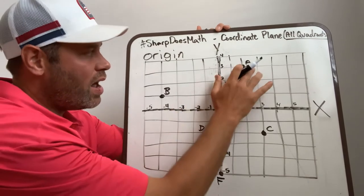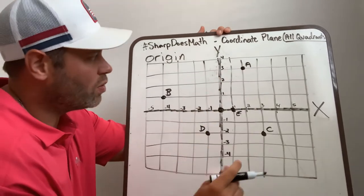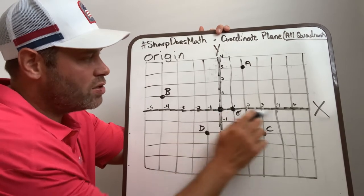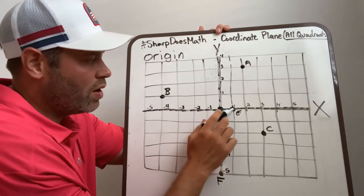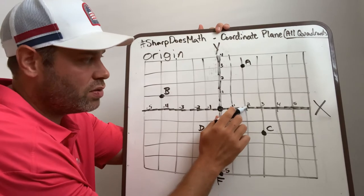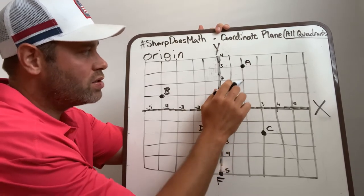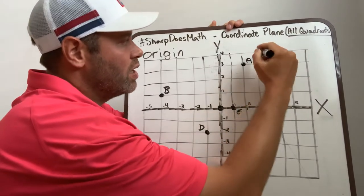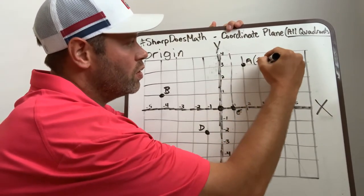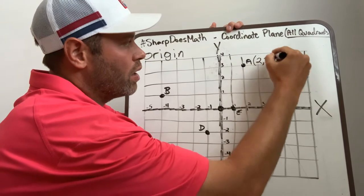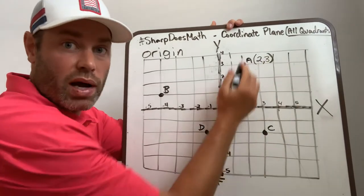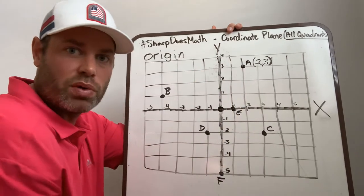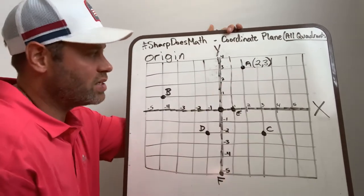When I look at A, I start at the origin. I'm going to use the x-axis first, so I go to positive 2 right here. And then I go up 1, 2, 3. So A is located at 2, 3. Positive 2, positive 3. We don't have to write a positive symbol, we just leave them as they are.